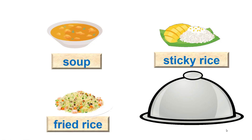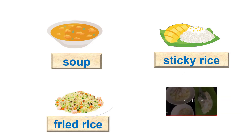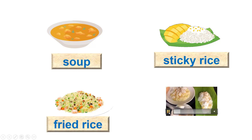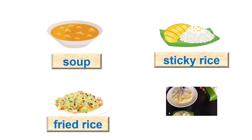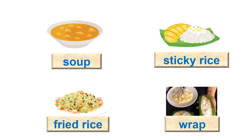And the last one. What is it? Open it. Let's watch a short clip. You can see a person is wrapping a kind of sticky rice in a banana leaf. We have a new verb. Listen. Wrap. Now repeat after me. Wrap. Wrap.